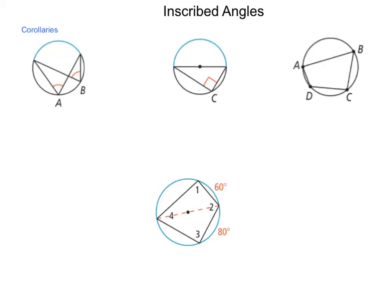The first corollary, as shown in the far left diagram here, says that if two inscribed angles intercept the same arc, then they're congruent. You can see that angle A here and angle B both intercept this arc out here. Because they intercept the same arc, they would be congruent.